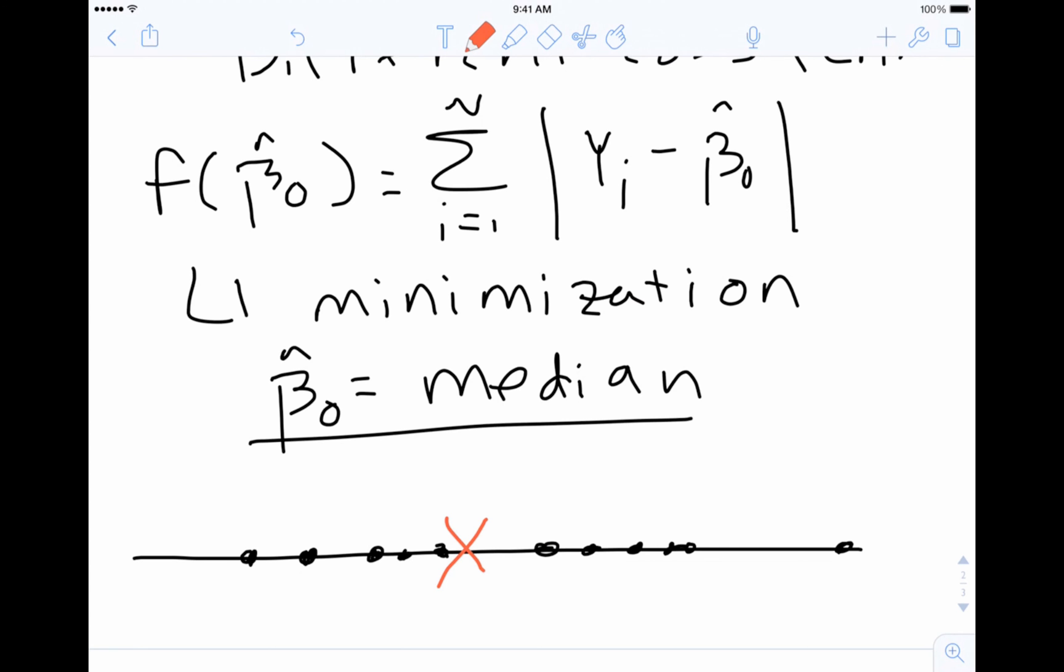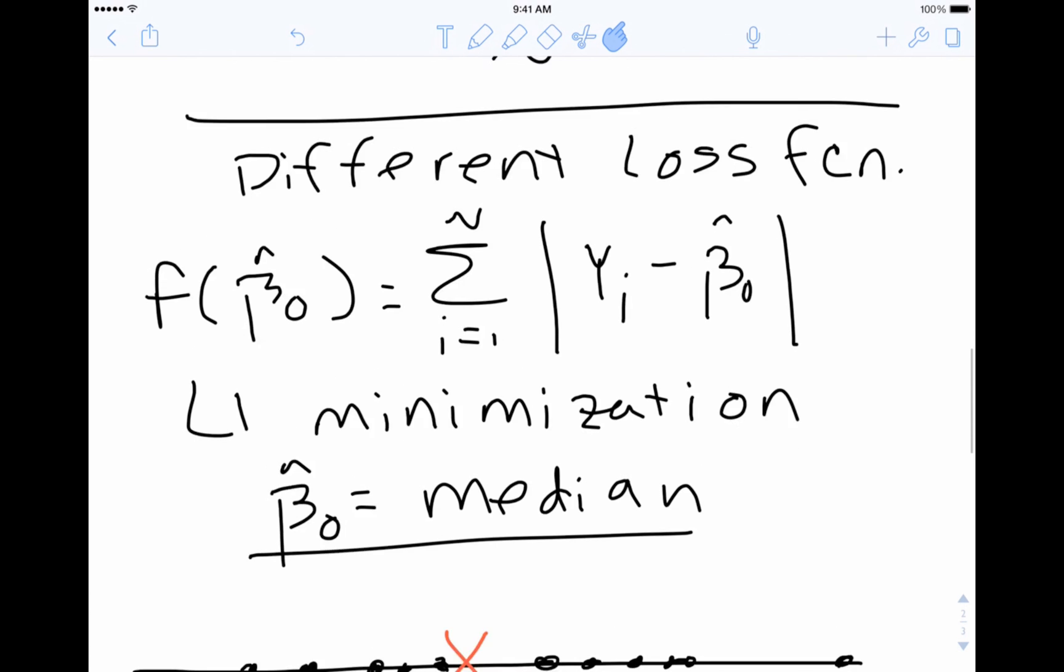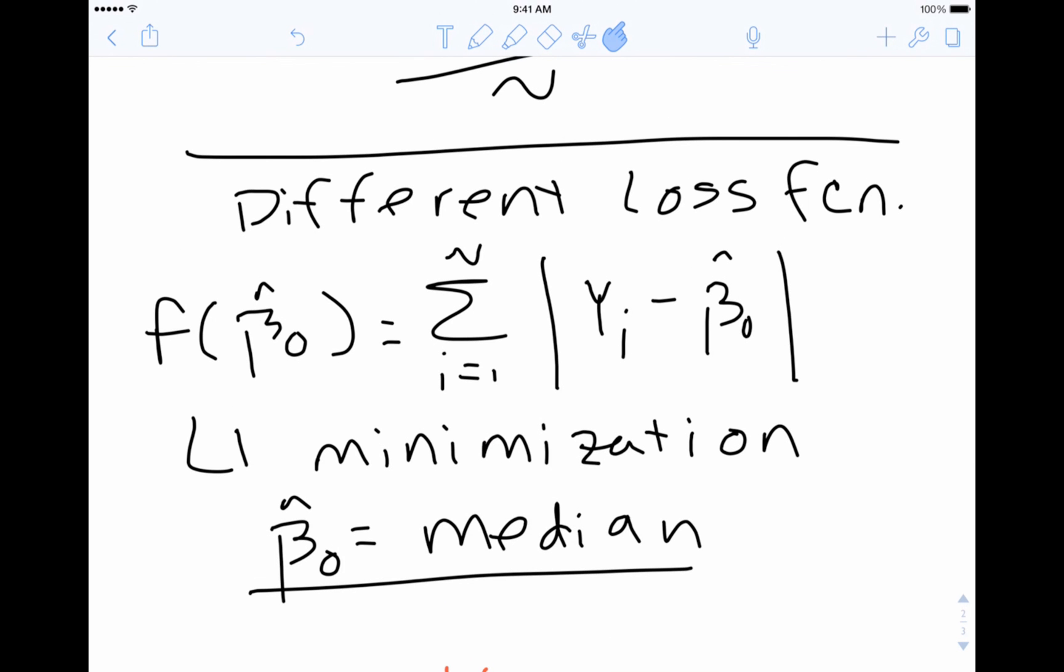So it's only the case, I should add, that this will be the median if you're running this model I just showed you with only a column of ones. It turns out that just for a general regression equation, if you put age and other regressors into the model and you use this loss function, this absolute difference loss function, it can be problematic. Sometimes it's used if you have outliers in your data, but it has some poor behaviors. For example, it might not have a unique solution, which isn't preferred.